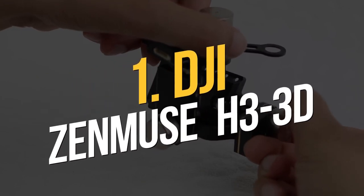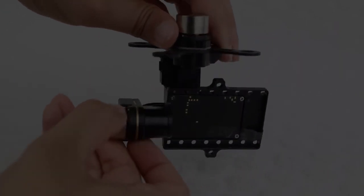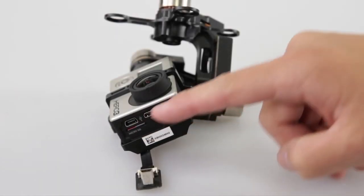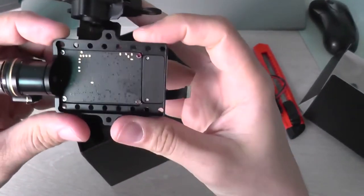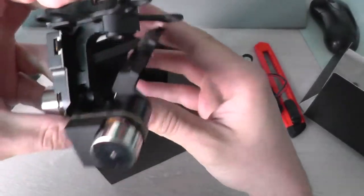Number one, DJI Xemuse H33D. This gimbal is primarily intended for DJI Phantom camera types, although it may also be used with GoPro Hero 4, 3, and 3 Plus models.